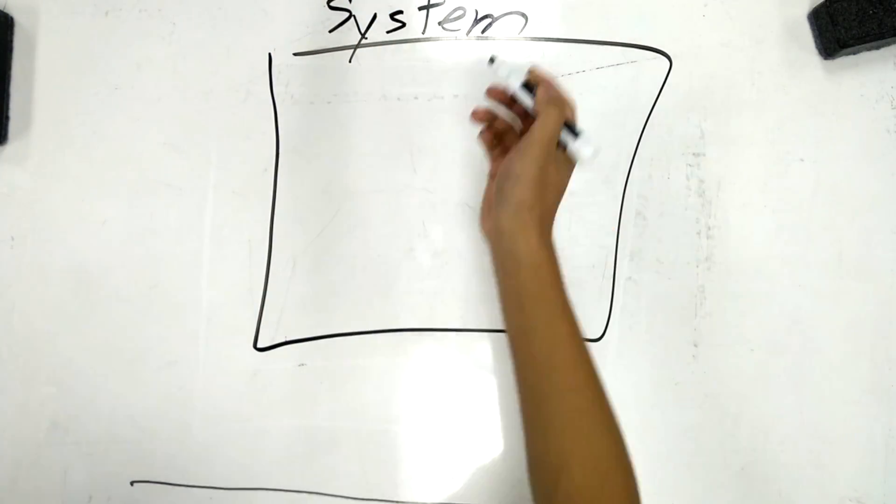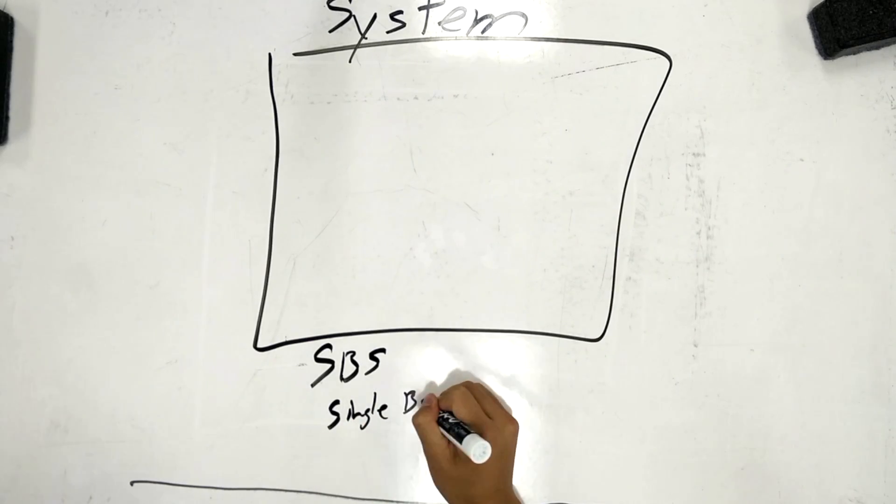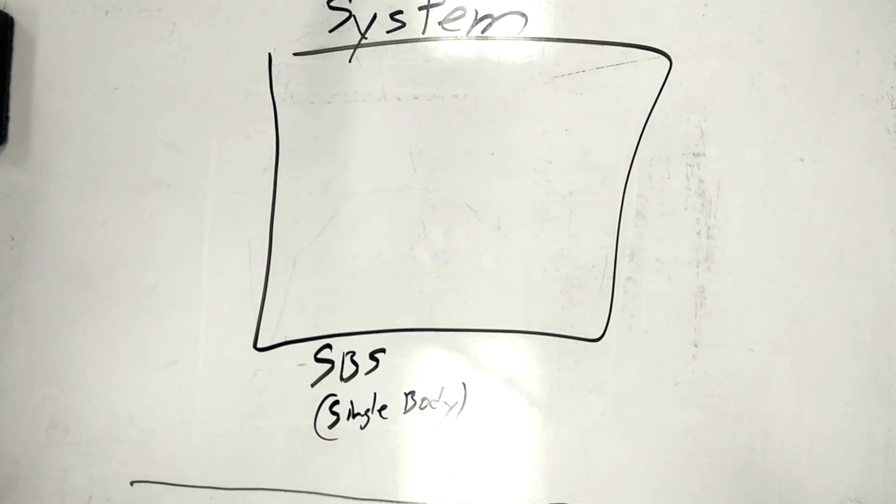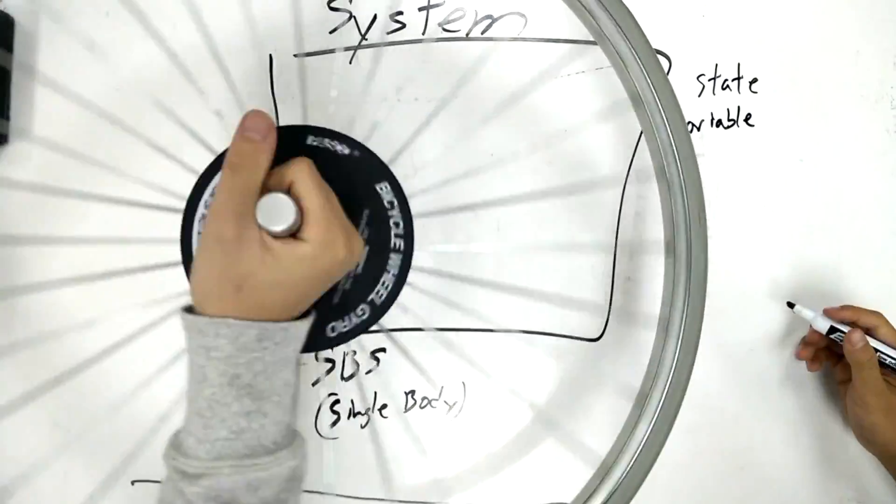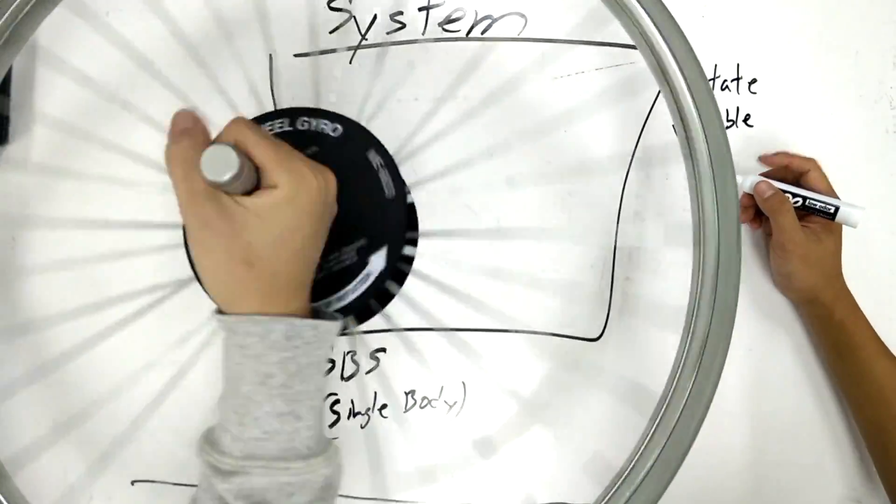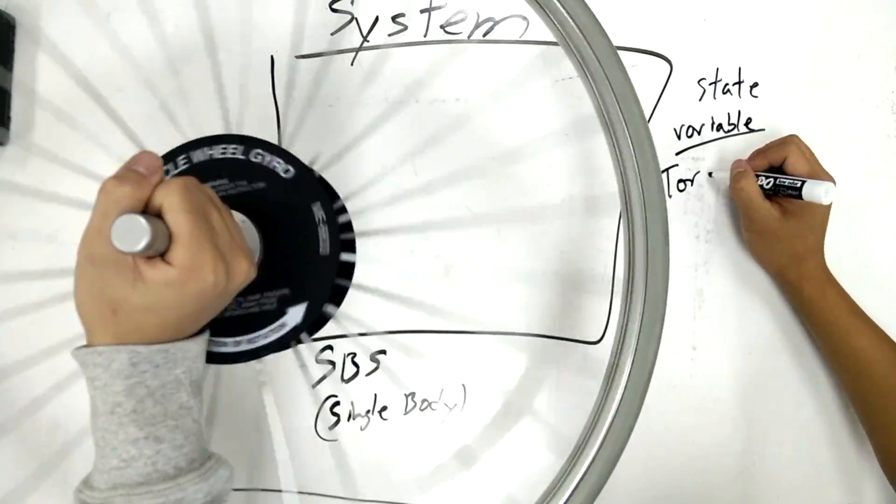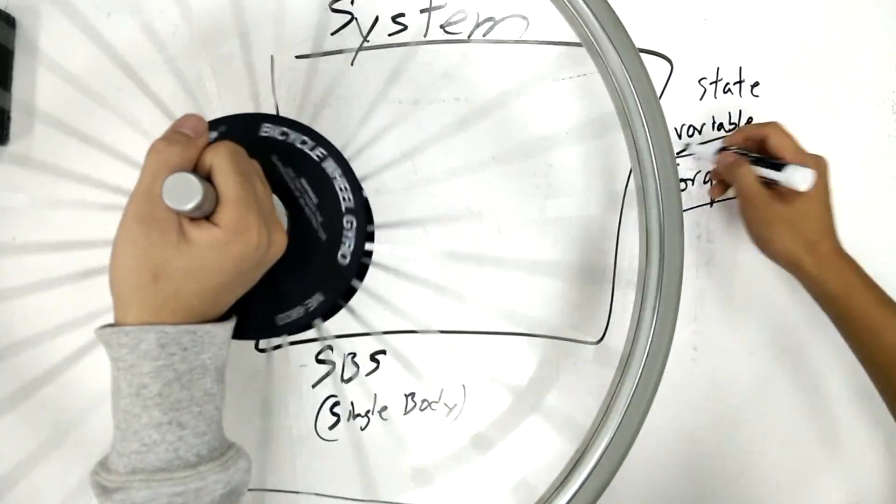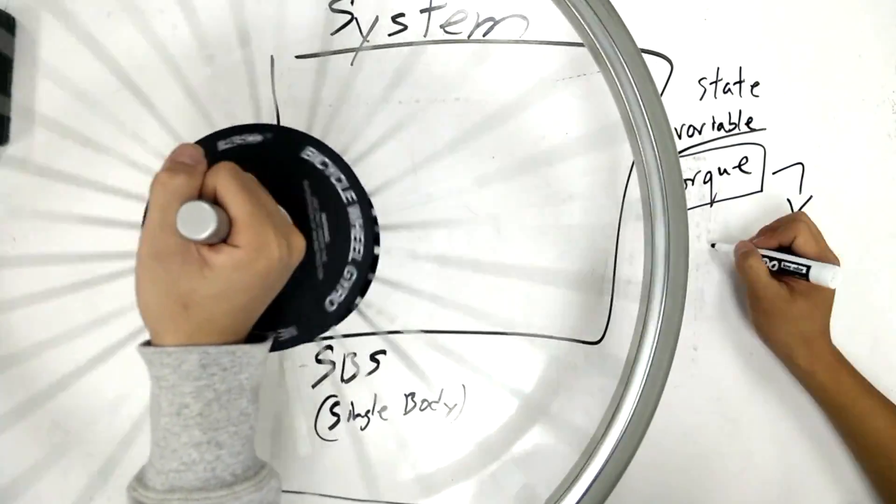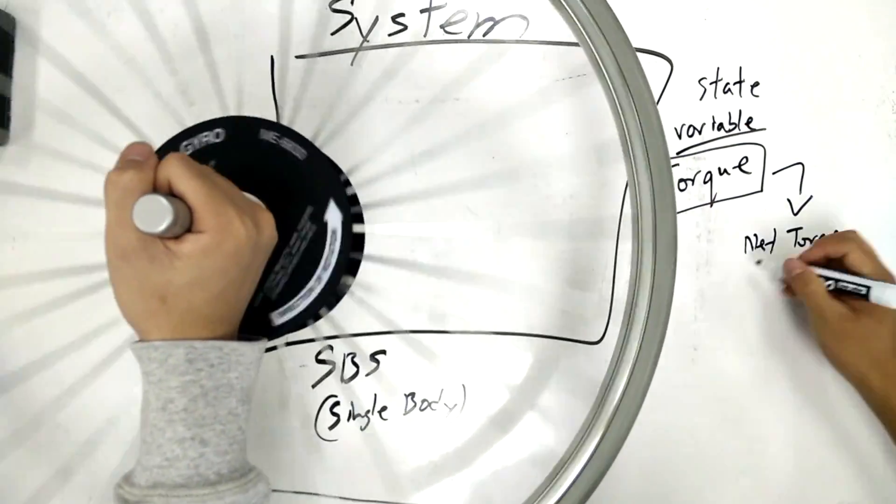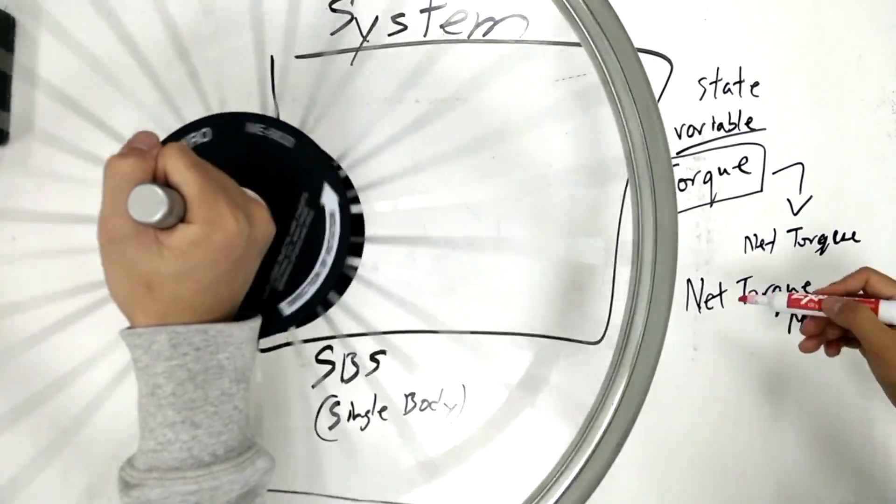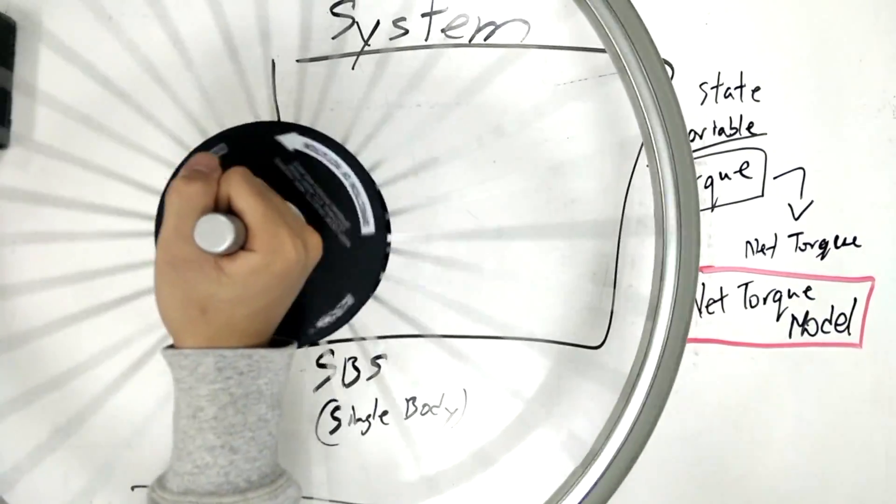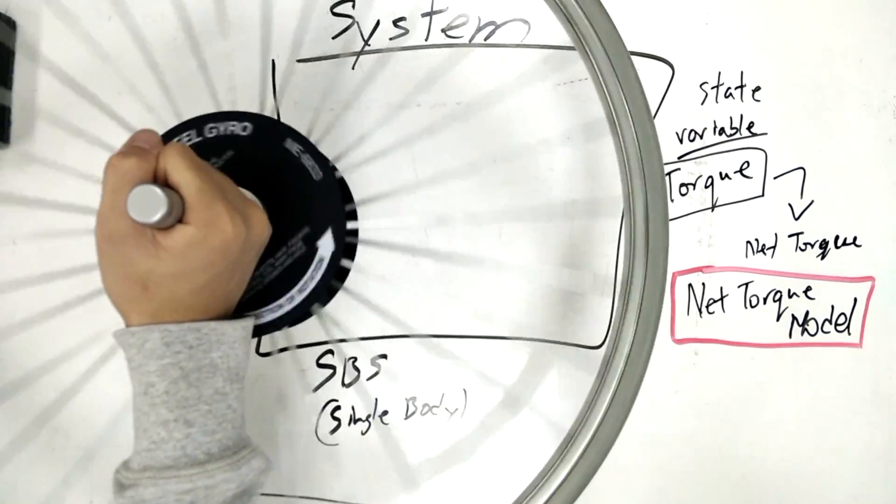Next, we have single-body systems when applied to rotation. Here in rotation, the state variable is torque for a single-body system. Torque, the agent of change is the net torque. And we use the net torque model to describe this. This giant wheel here is the spinning single-body.